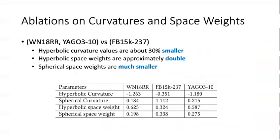And also, it is important to set the curvatures of the constant curvature space and the space weight correctly. This parameter set provides flexibility for the model to capture the intrinsic heterogeneous structures in KG data. Specifically, we report the learned curvatures and the space weight for each dataset in the table.